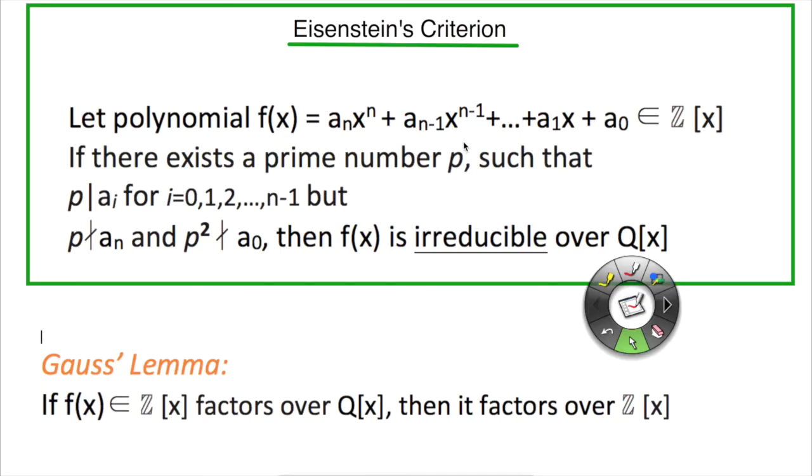All right, so today we're going to be talking about Eisenstein's criterion, and this criterion is a really important component in the field of polynomial rings. It's named after Ferdinand Gotthold Max Eisenstein, a German mathematician.